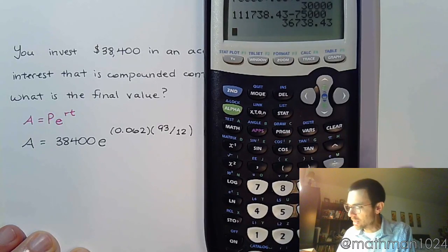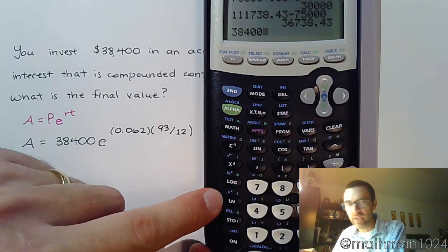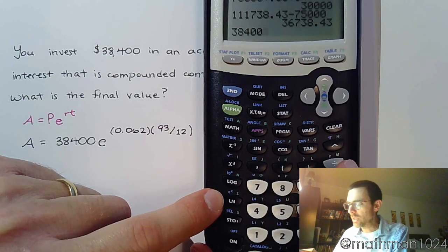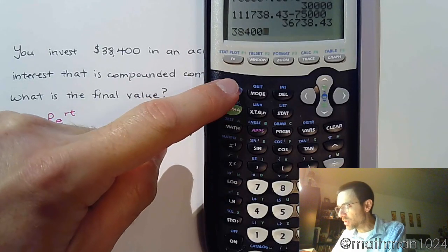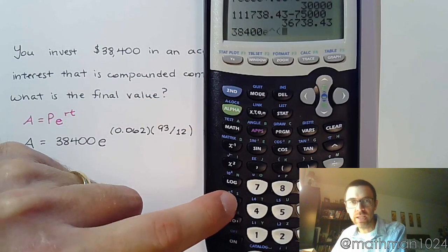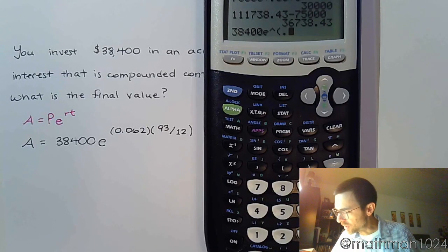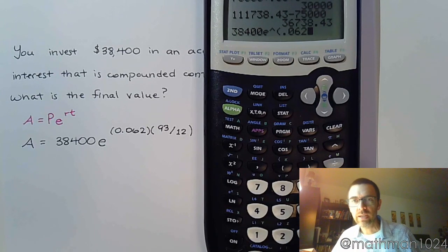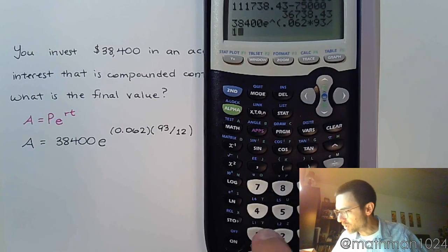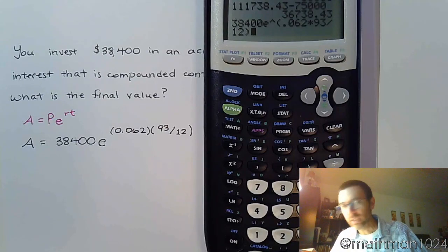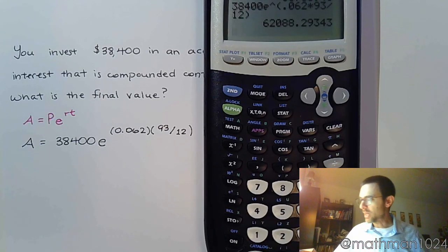Alright. So, let's see what this guy looks like. $38,400. Now, over here, you've got the ln. So, we've talked about logarithms. This is a special logarithm we're going to get to later. So, if you do second ln, you get the e, the power, and the parentheses. So, I'm going to do .062 times. Now, I've got that fraction to deal with. So, it's 93 divided by 12. Again, I'm going to let the calculator do all the work for me. And, here's my answer.